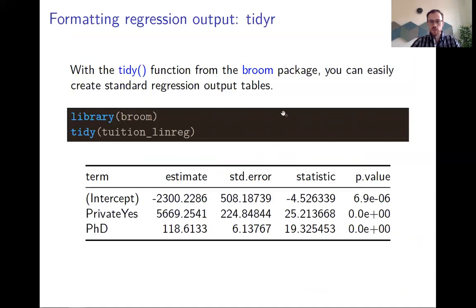A way of getting nicer formatted regression output is by using tidy from the broom package. Tidy basically just collapses the information into a nicer formatted table, and you can see here we have the estimate, the standard errors, and p values all in a much nicer formatted table.